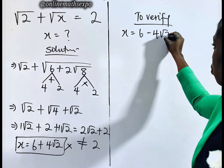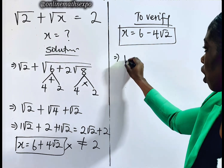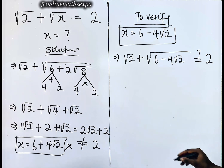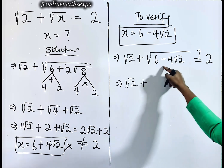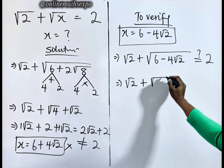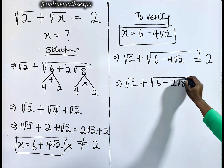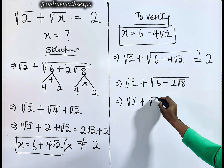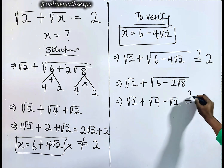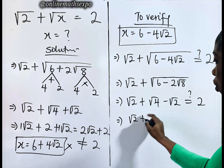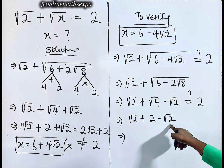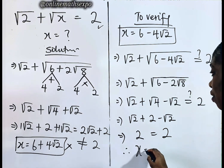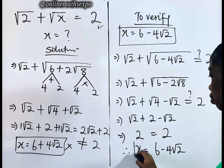Now let's check x = 6 − 4√2. Plugging in: √(2 + √(6 − 4√2)) — is this equal to 2? Similarly, √(6 − 4√2) simplifies to √(6 − 2√8), which by the same rule gives √4 − √2, equal to 2 − √2. So we have √(2 + 2 − √2) = √(4 − √2 + √2)... which simplifies: √2 − √2 cancels, leaving √4 = 2. And 2 equals 2, which means x = 6 − 4√2 is absolutely correct!